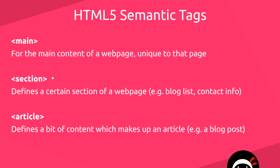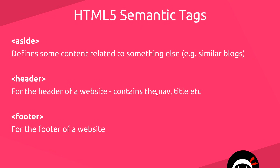We also have a section tag, which defines a specific section of a web page — that could be a blog list, contact information, or something else. We can have several different sections on a page, each sectioned off with its own meaning. We also have an article tag, which defines content making up some kind of article, like a blog post or a news post. There's also an aside, which defines content related to something else — for example, at the bottom of an article, a section for similar blogs would be an aside, since it's related to the article but not exactly part of it.